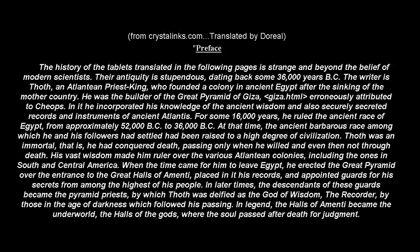Teth was an immortal — that is, he had conquered death, passing only when he would and even then not through death. His vast wisdom made him ruler over the various Atlantian colonies, including the ones in southern Central America. When the time came for him to leave Egypt, he erected the Great Pyramid over the entrance to the Great Halls of Amente, placed in it his records, and appointed guards for his secrets from among the highest of his people. In later times, the descendants of these guards became the Pyramid priests, by which Teth was deified as the god of wisdom, the recorder, by those in the age of darkness which followed his passing.